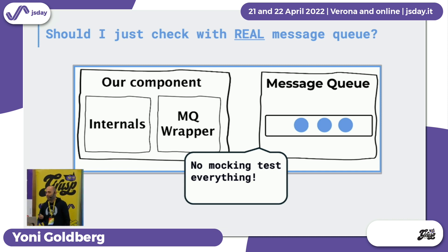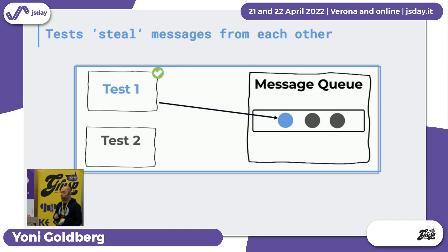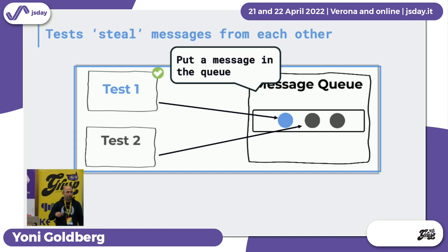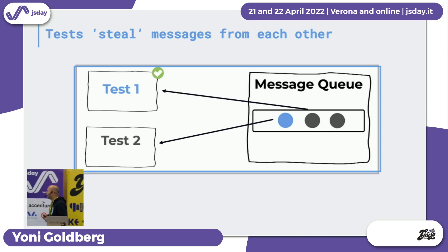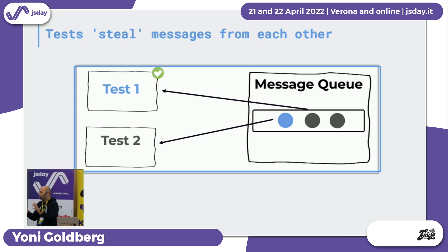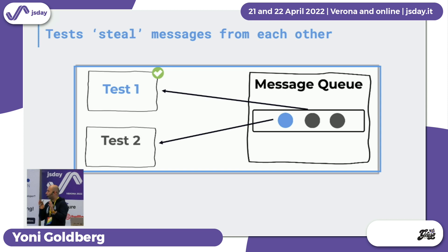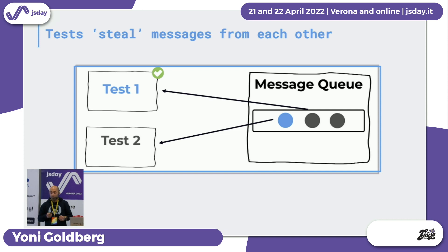With a real message queue, we saw tests start stealing messages from each other. For example, test one starts and puts a blue message; then test two puts a gray message. In a multi-process test runner, test two takes the message of other tests and vice versa — it was a complete mess. So we tried to reach some sane state here. The next logical step was: let's forget about multi-process. Let's run one process sequentially and purge the queue between tests.